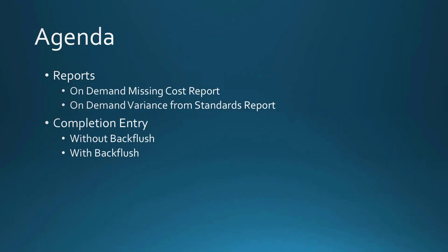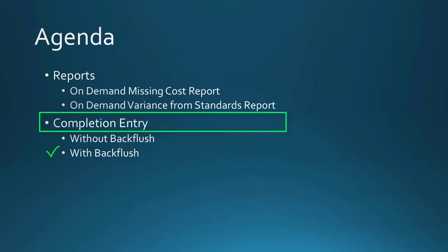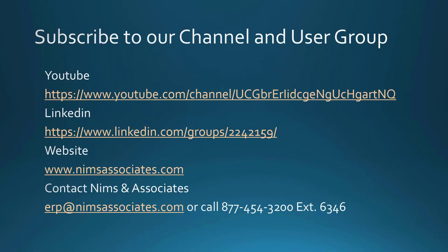To recap: we reviewed the reports, then did a simple completion entry where the issue method for labor and material was not backflush, and another where it was backflush — showing how backflush automatically creates those transactions. You can contact us at vimsassociates.com, find us on LinkedIn and YouTube, email us at erp@vimsassociates.com, or call 877-454-3200 extension 6346. Thank you for your time today.